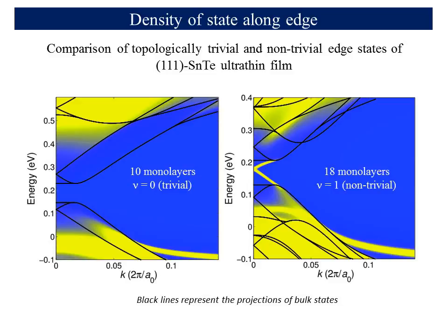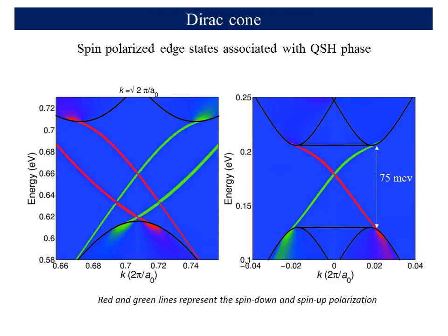For two-dimensional topological insulators in the quantum spin Hall phase, the edge states are expected to be spin polarized with opposite polarization of each branch. Therefore, we calculated the Green's function contributions of the spin-up and spin-down 111 projections in the edge spectral function. The sign of G-up minus G-down difference corresponds to the spin polarization of the edge states.